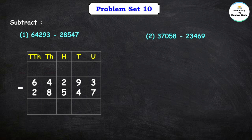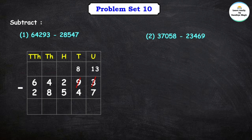Let's subtract 7 from 3. Can we subtract 7 from 3? No, because 3 is a smaller number than 7. So let's borrow 1 from this 9 in the tens place. If we borrow 1, the tens place becomes 8, and the unit place becomes 13.